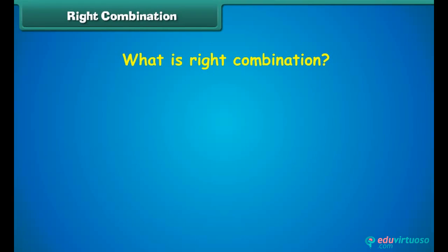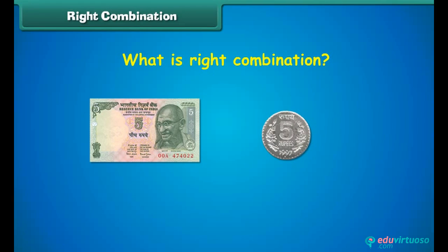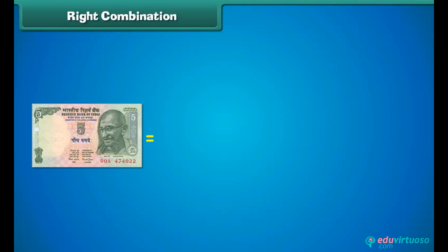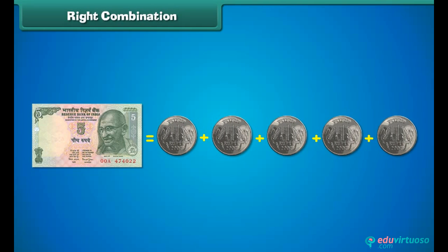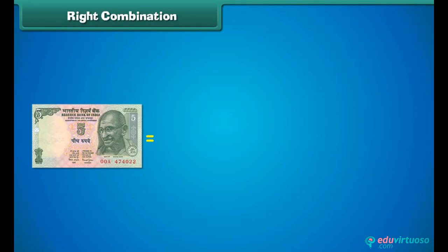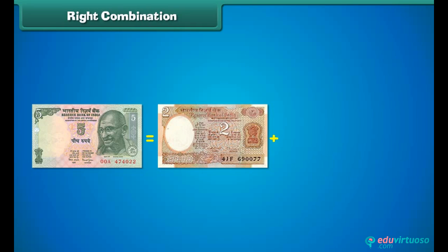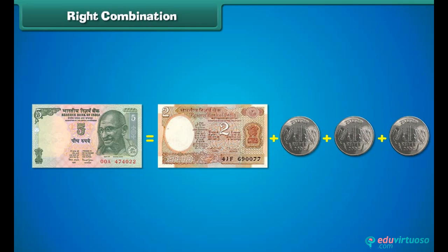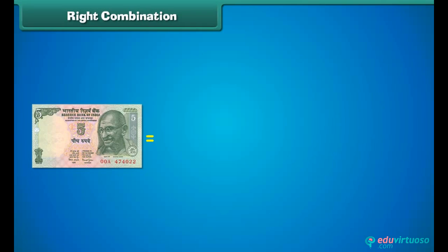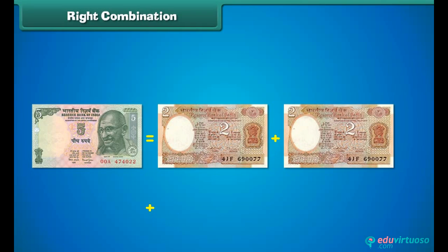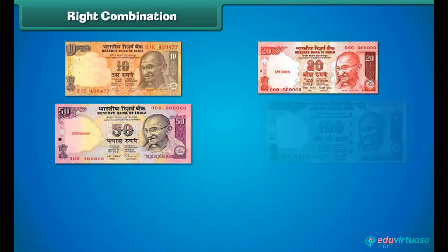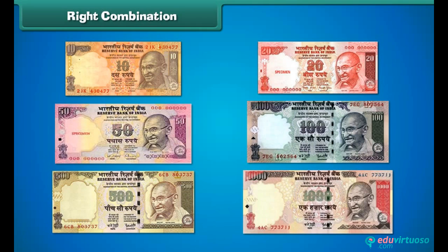Let us learn about some correct combinations of notes and coins. One 5 rupee note is equal to the sum of 5 one-rupee coins. One 5 rupee note is also equal to the sum of 1 two-rupee note and 3 one-rupee coins. Similarly, we can have different correct combinations for 10, 20, 50, 100, 500, and 1000 rupee notes.